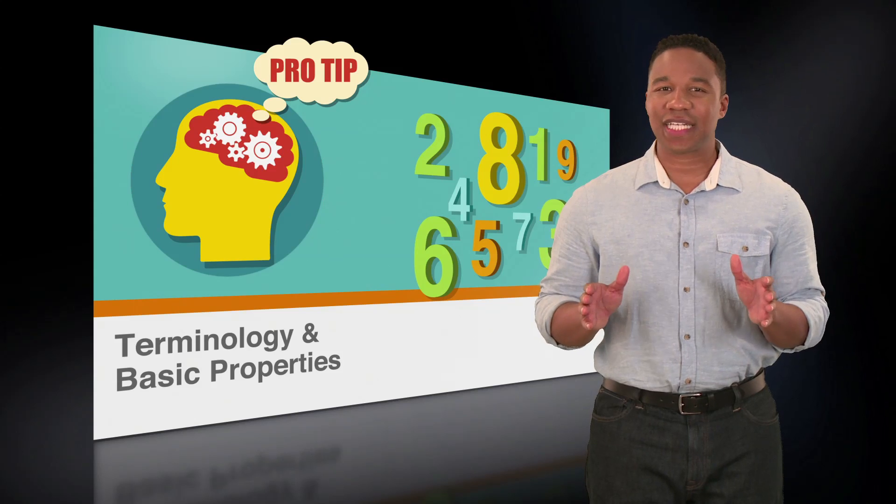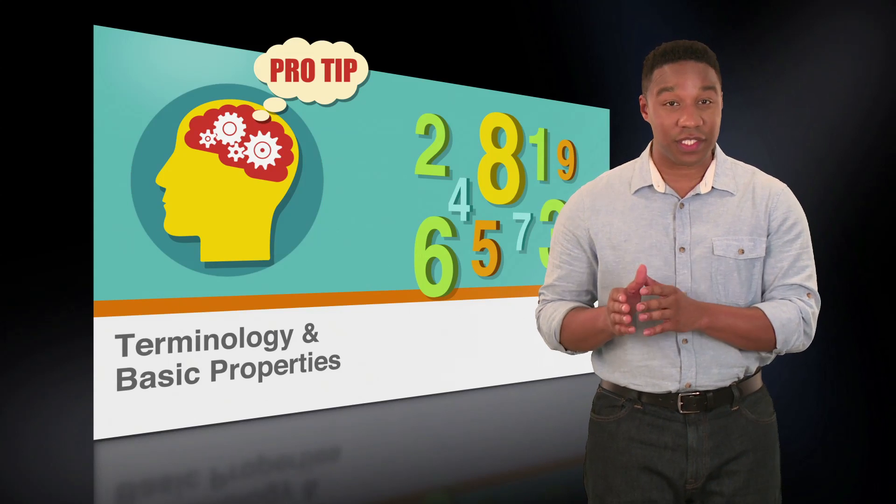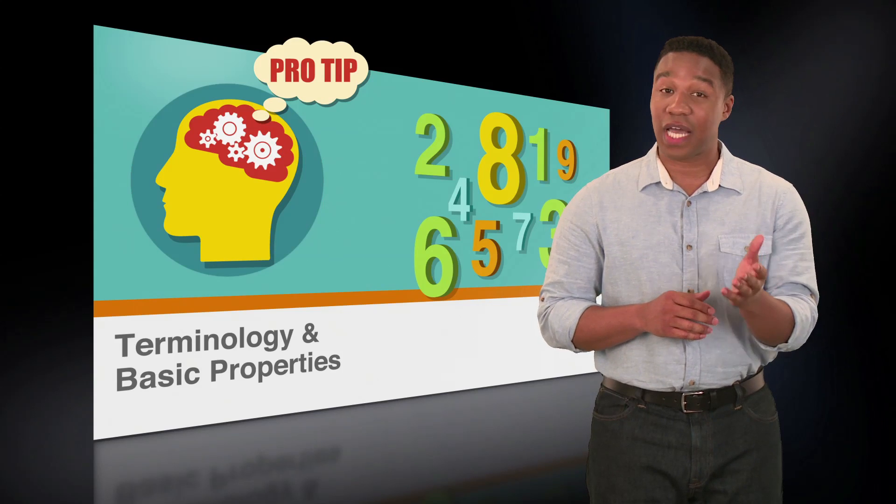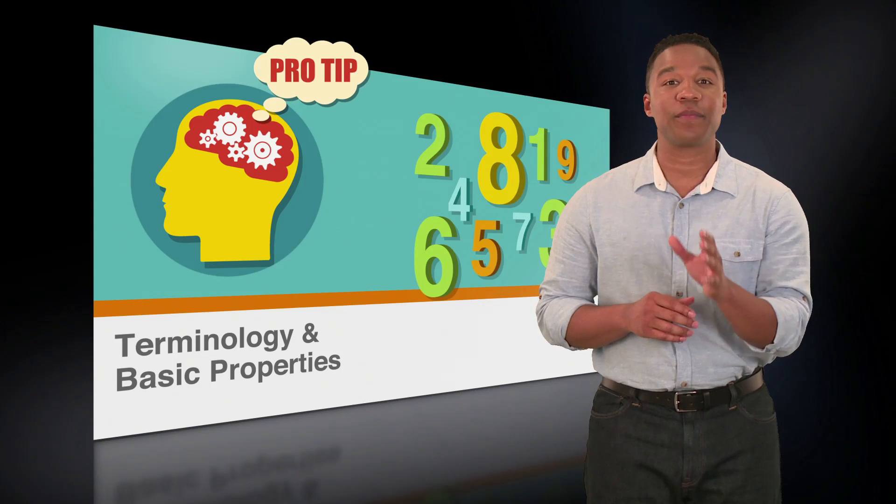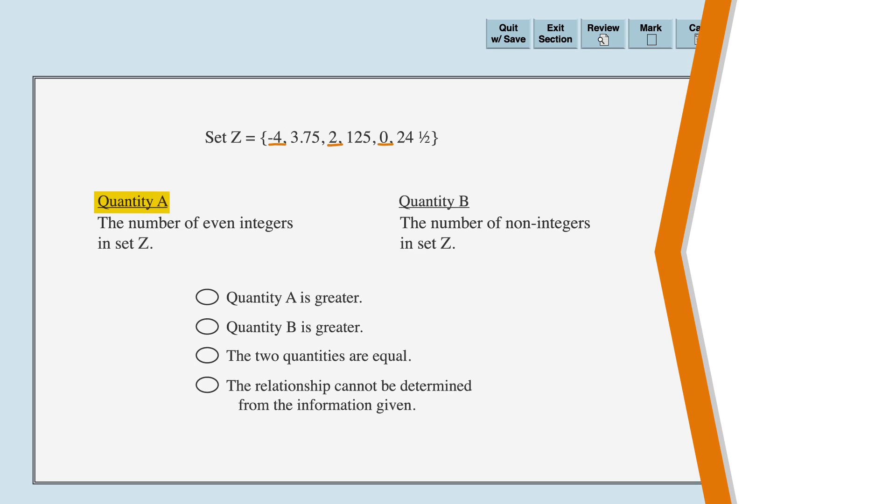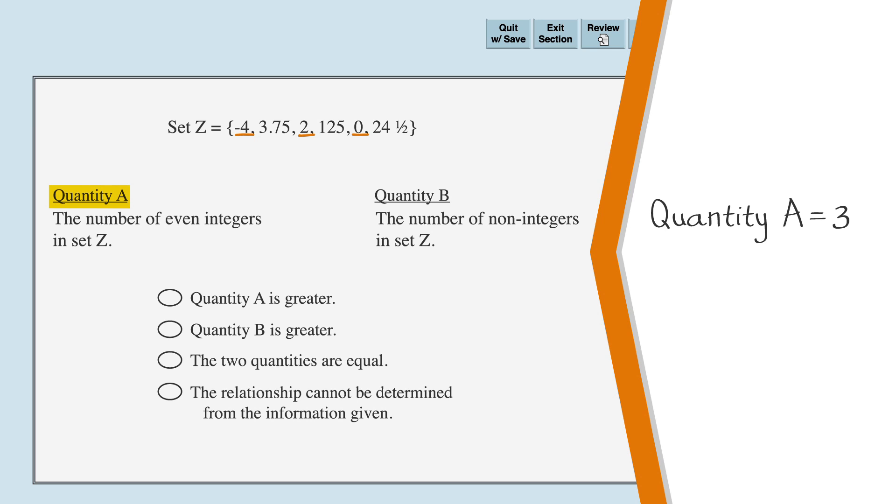The question isn't asking you to add to get the sum of integers. It's asking you to pick the largest quantity of integers or non-integers within the group of numbers themselves. So you shouldn't add negative 4 plus 2 plus 0. You only need to count the number of integers, which is 3. Note that the question also specifies even integers only, which is why 125 is not included in our list. So on your scratch paper, write quantity A equals 3.